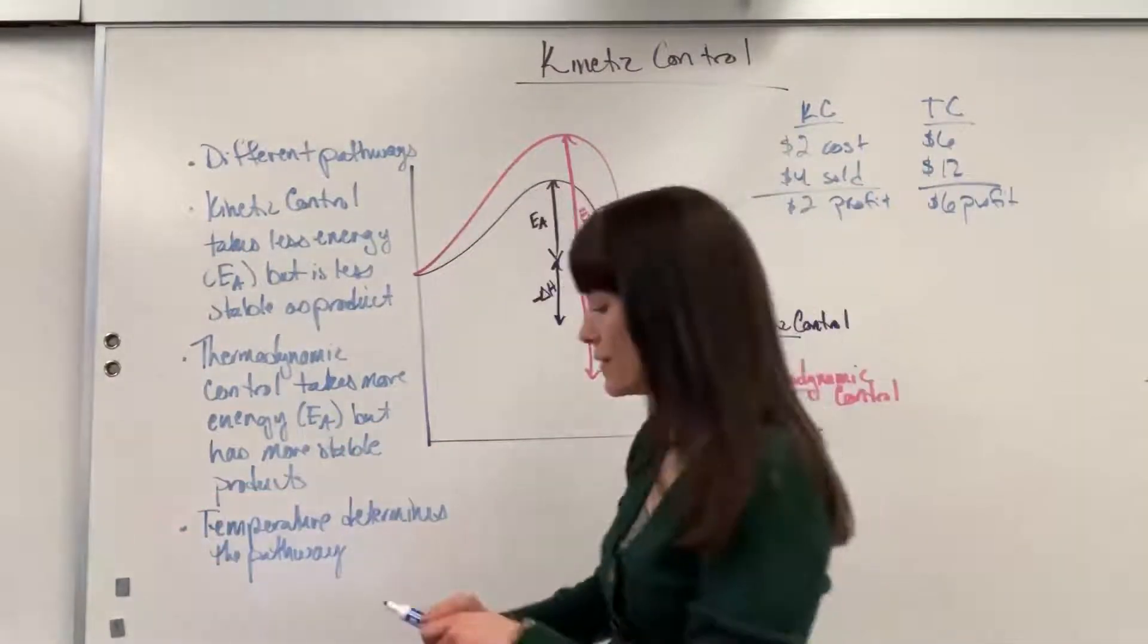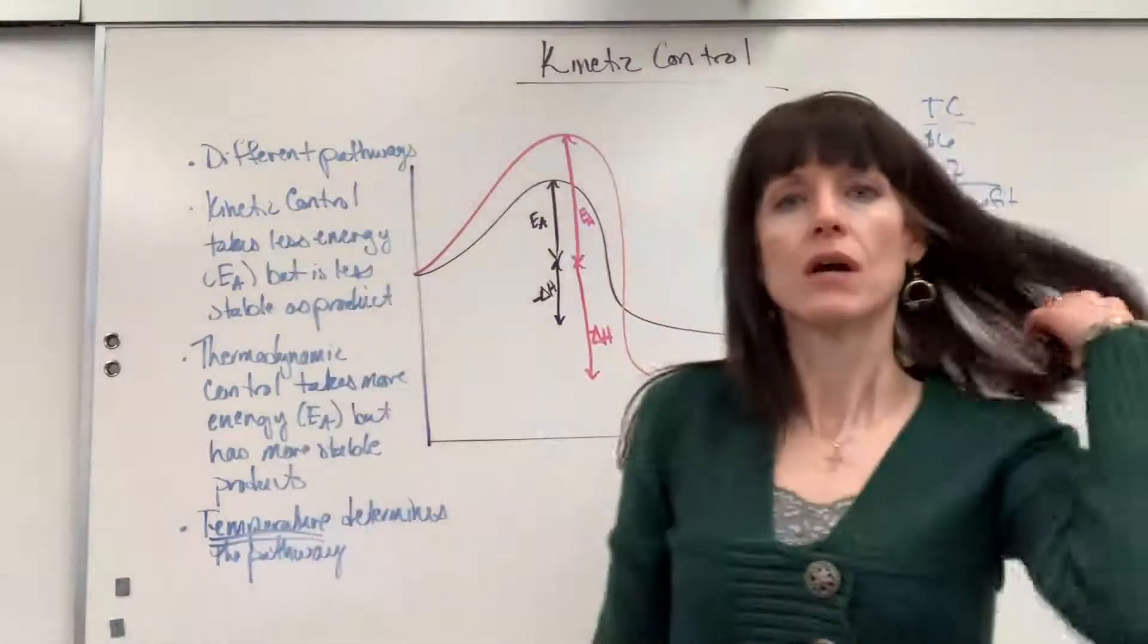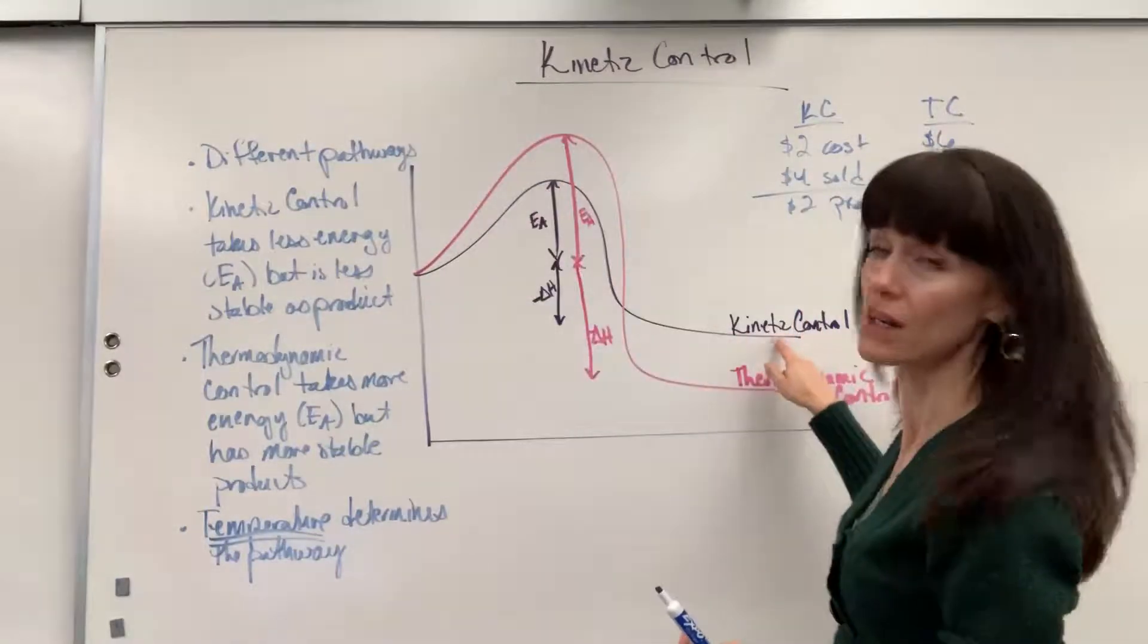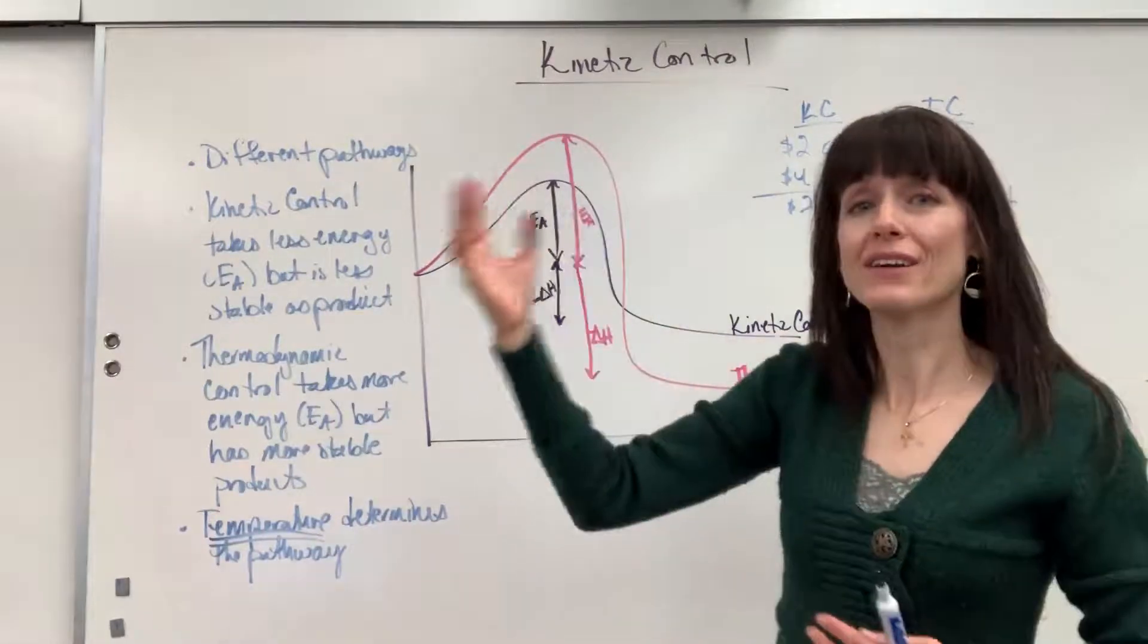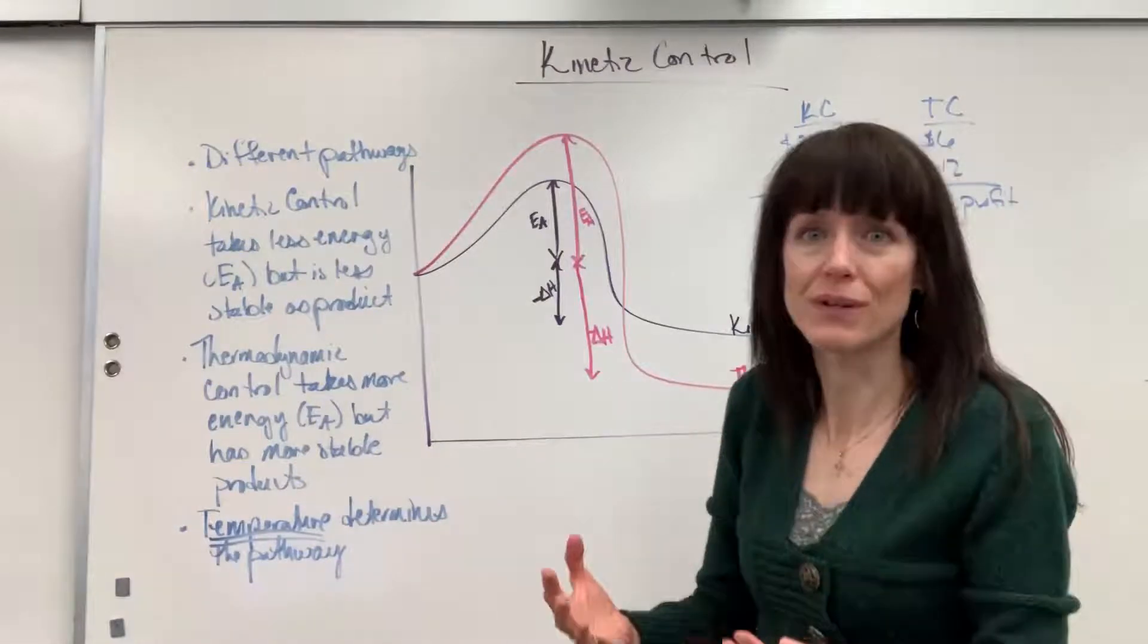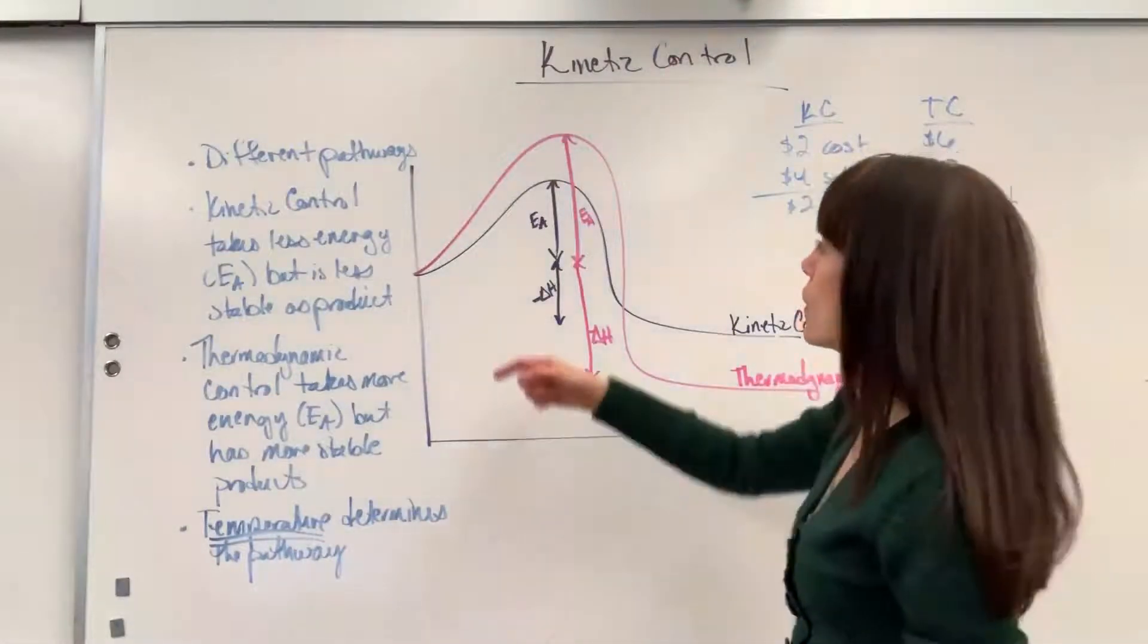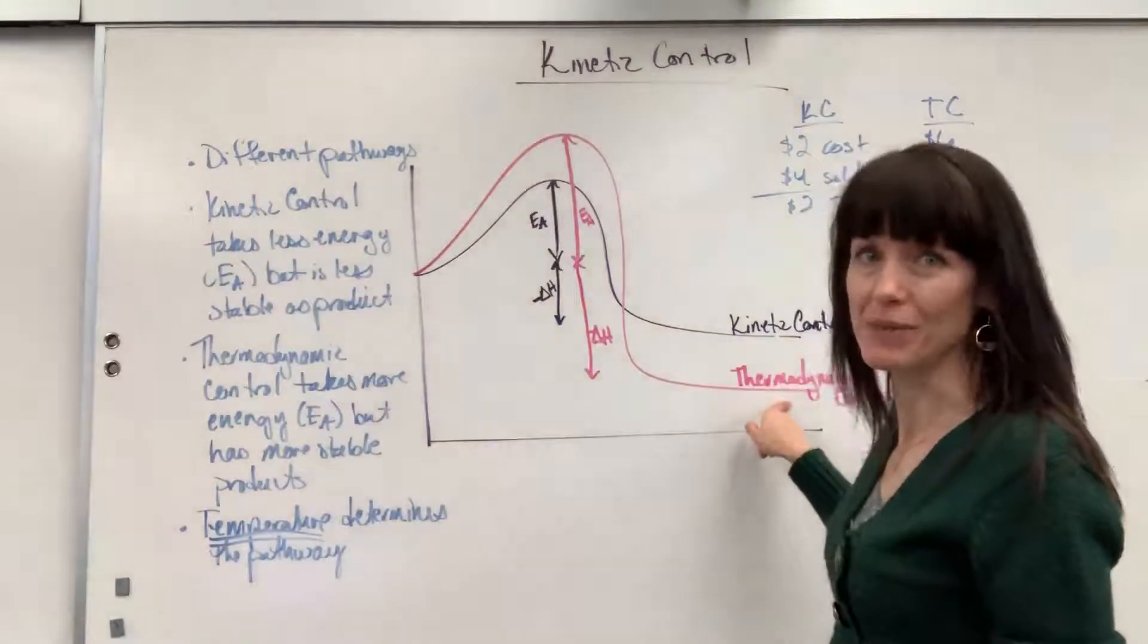So what's the determining factor right here? Temperature. We've found data that at low temperatures, you are going to have much more of this product, the kinetic control, less stable product. At higher temperatures, though, it's like me having more in my bank account, I can splurge and spend more, invest more on quality fabric. At higher temperatures, there's more energy available. So at higher temperatures, we see more products from the thermodynamic control.